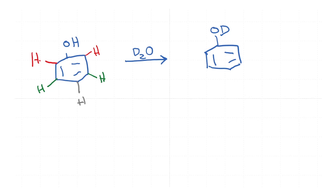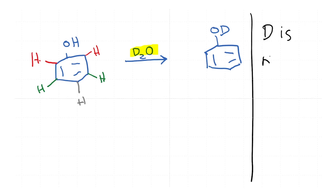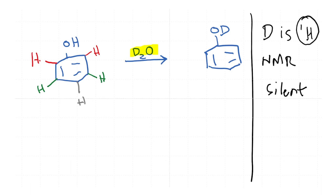What we do is we take phenol, whose structure is shown here — it is benzene with a hydroxyl group — and we dissolve it in D2O. D2O is basically deuterated water. The concept we need to understand is that deuterium is NMR silent, which means that under the conditions for recording a proton NMR spectrum, deuterium is silent. So once you replace a hydrogen with deuterium, that peak will disappear.